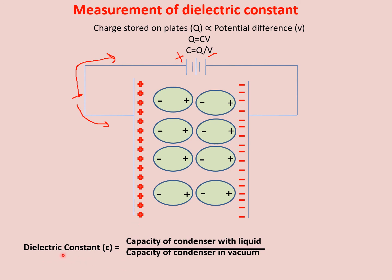इसीलिए हमने formula लिखा है: dielectric constant is equal to capacity of condenser with liquid upon capacity of condenser in vacuum. Vacuum की case में capacitance कम थी, लेकिन जब substance add किया, तो और ज़्यादा charge develop हुआ, जिससे plate की capacity increase हुई. उन values का ratio निकालने से dielectric constant की value find out हो जाएगी.